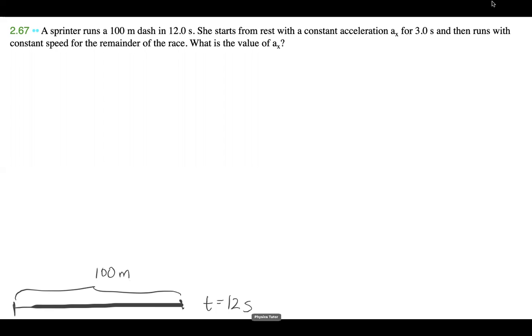We say that she starts from rest with a constant acceleration ax for three seconds, and then runs with a constant speed for the remainder. So arbitrarily, let's just say that for this portion, this is three seconds, and this has an acceleration of ax.